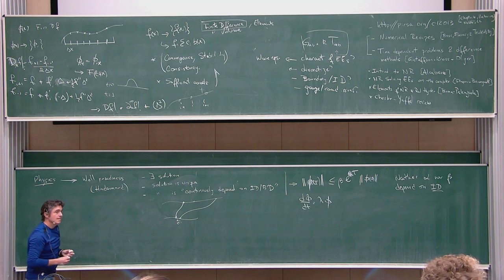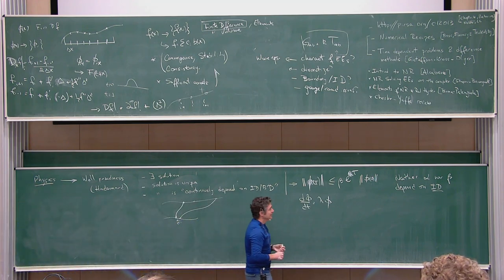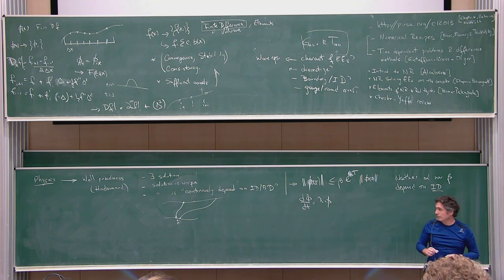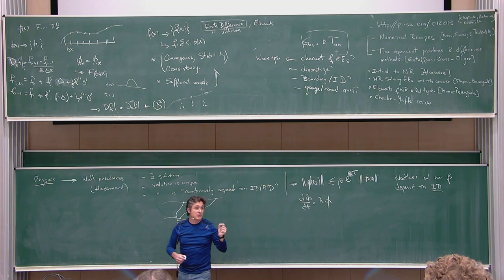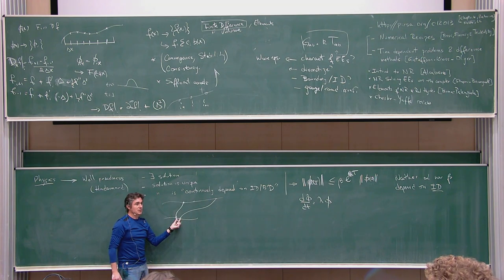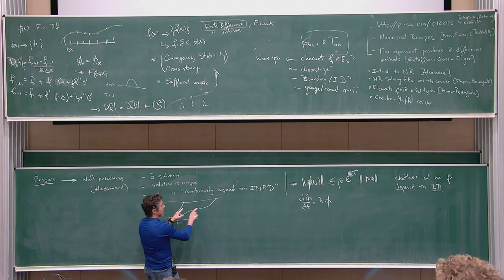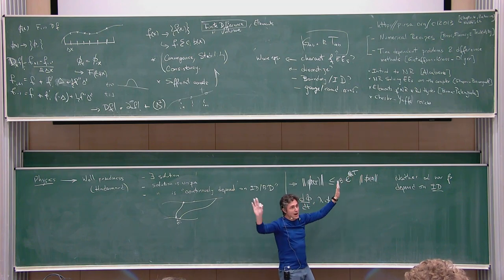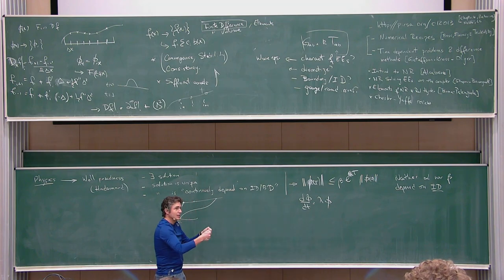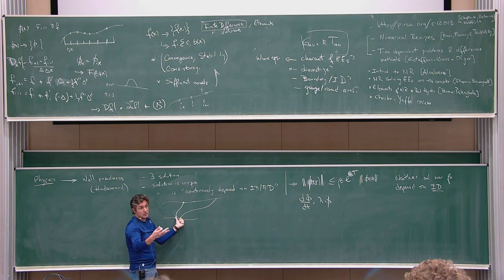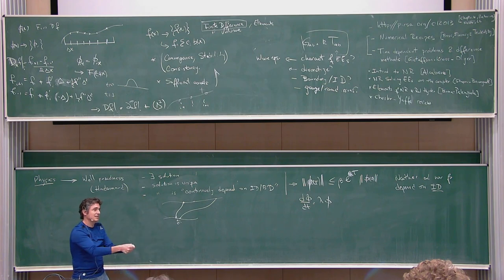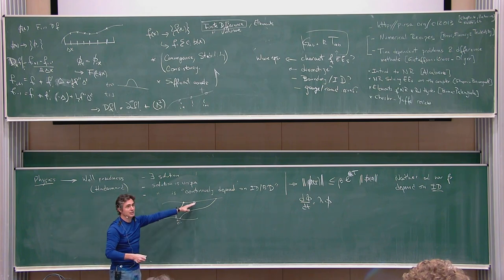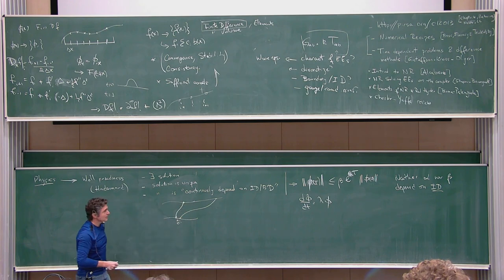Question: do chaotic systems fit into this well-posedness condition? Chaotic systems have extreme sensitivity to initial conditions — a very large positive exponent beta — but if you take epsilon to zero, the solutions still converge. So chaotic systems are well-posed in this sense, but because you can never prepare an experiment with exactly the same conditions, in practice you'll always see divergence.